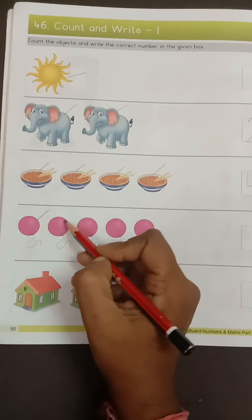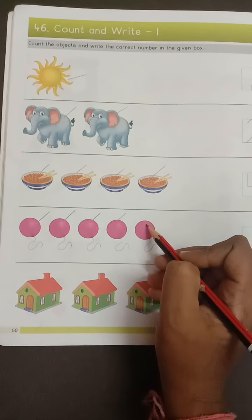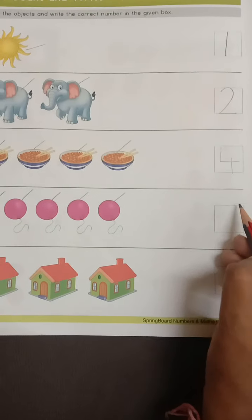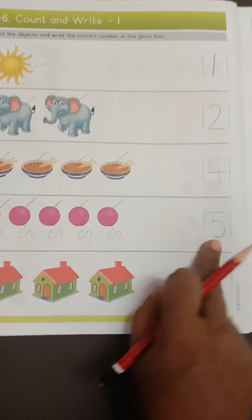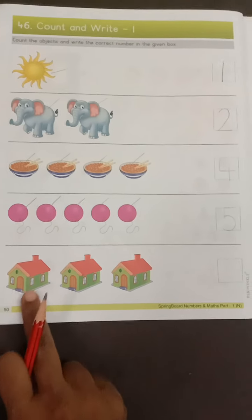One, two, three, four, five. Five balloons are there. So we will write number five in the box. Okay kids.